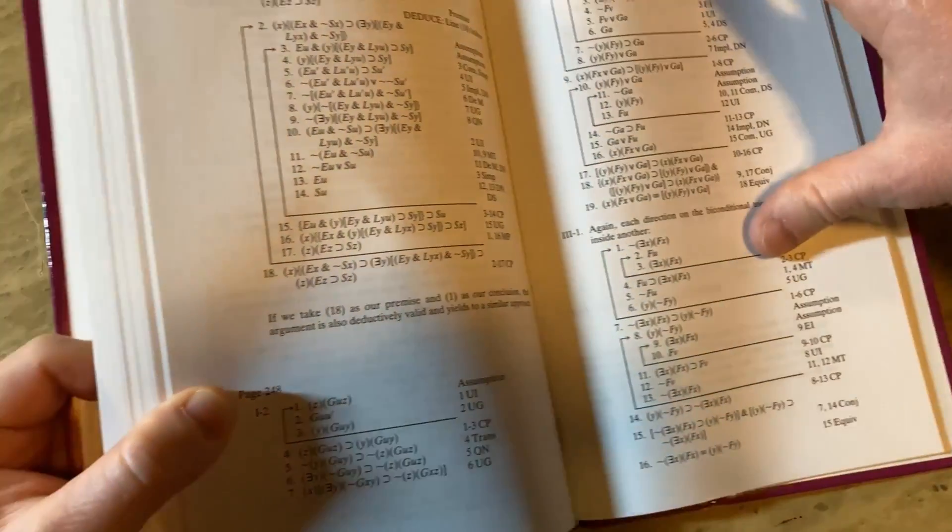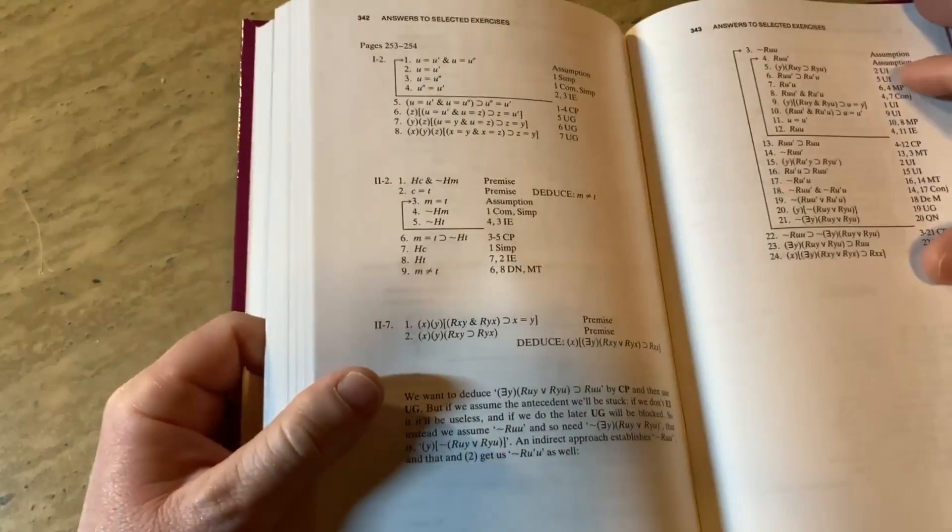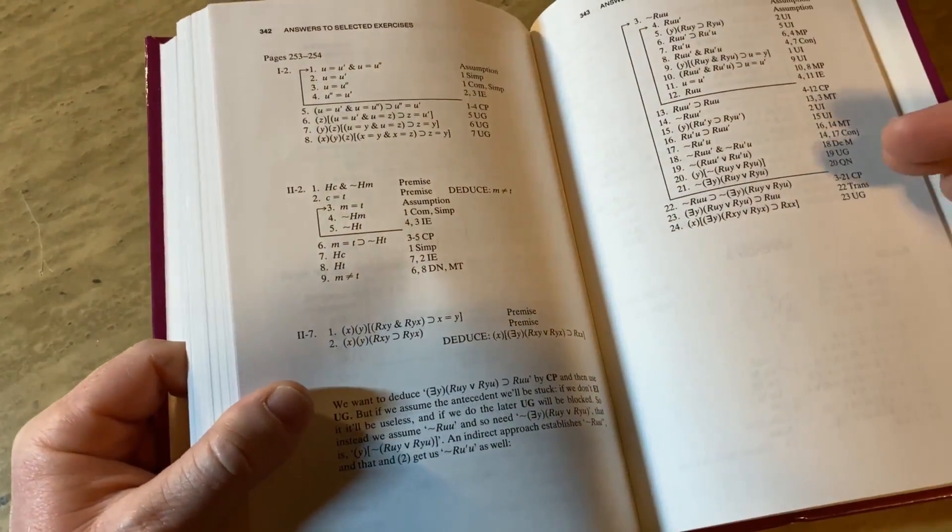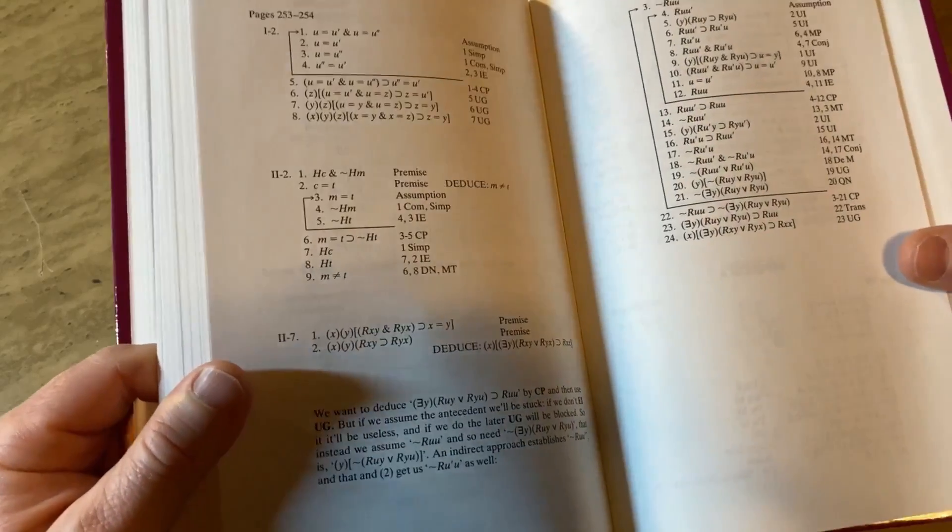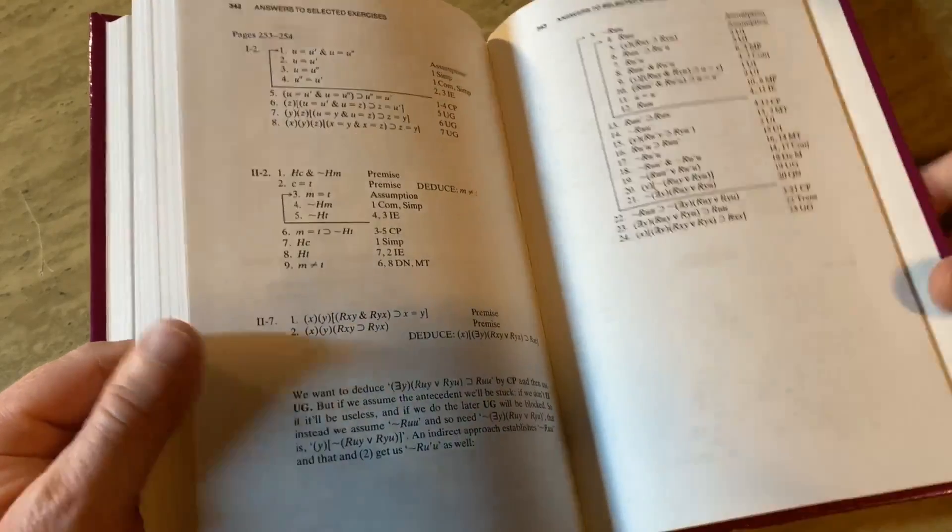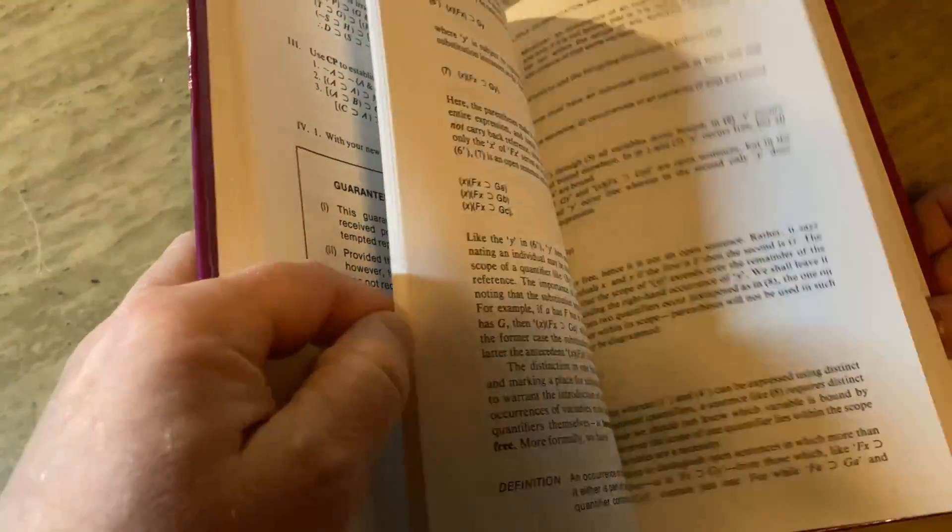It's not going to be this hardcore, but it's going to jump to paragraph style proofs, which is how you write actual mathematical proofs. And again, I think the book by Velleman is a really good choice.